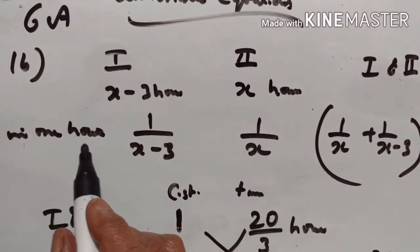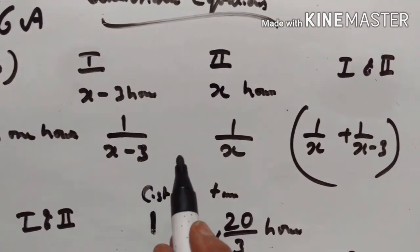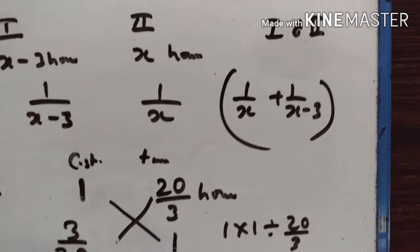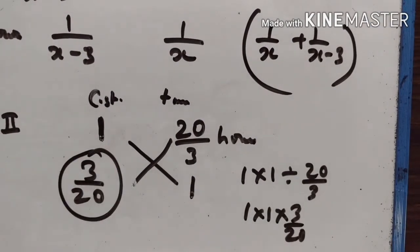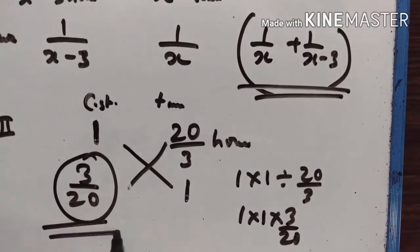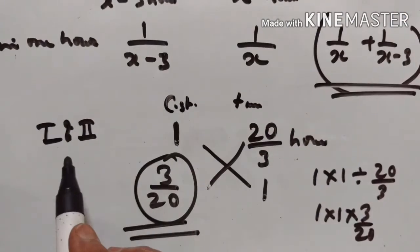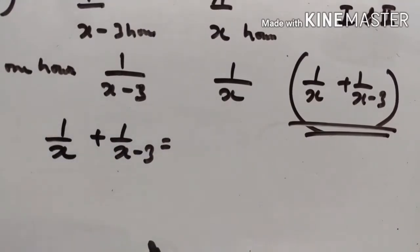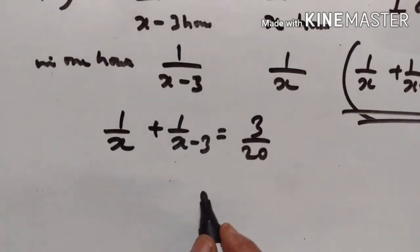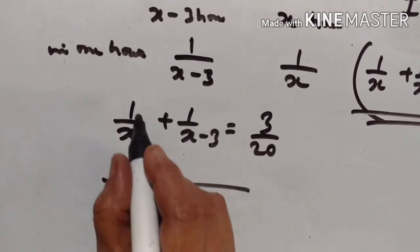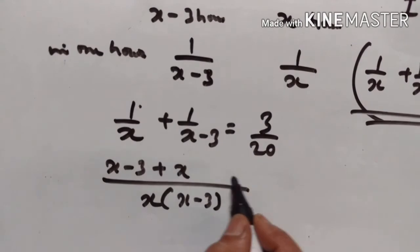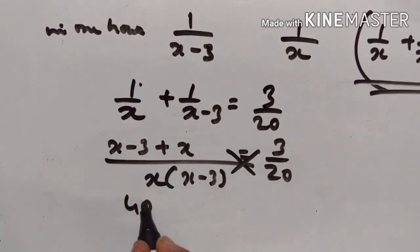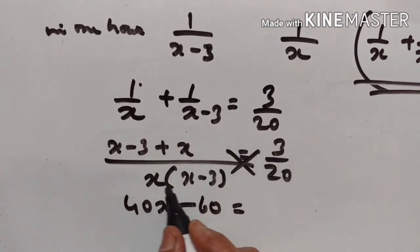The part of the cistern filled by pipe one in one hour is one upon x minus three, by pipe two is one upon x, and by both pipes together is one upon x plus one upon x minus three, which equals three upon twenty. Cross multiplying: (2x minus 3) times 20 equals 40x minus 60, which equals three times x(x minus 3).